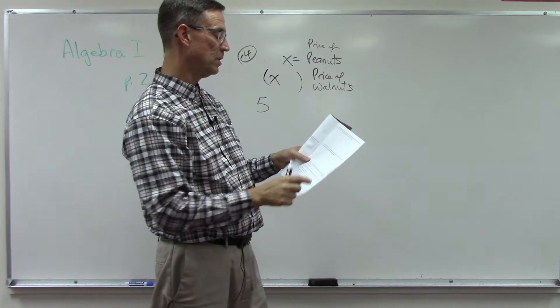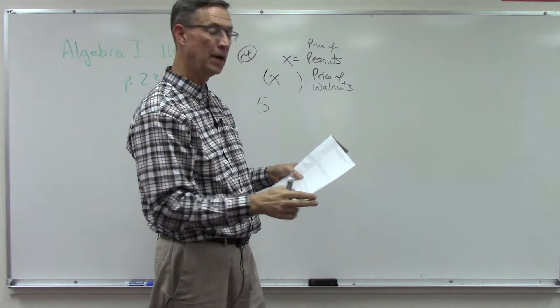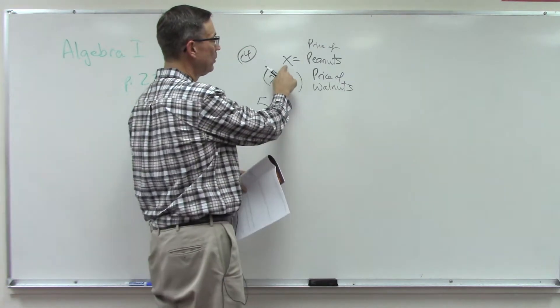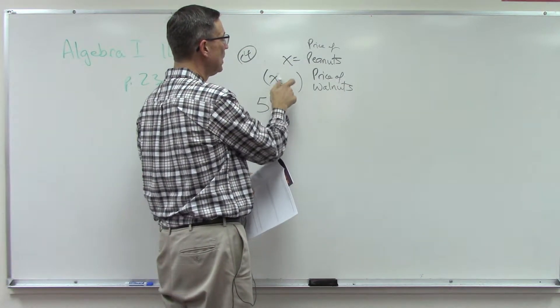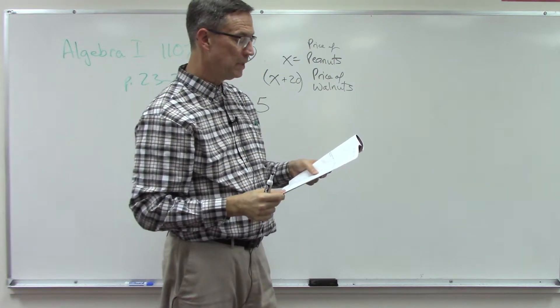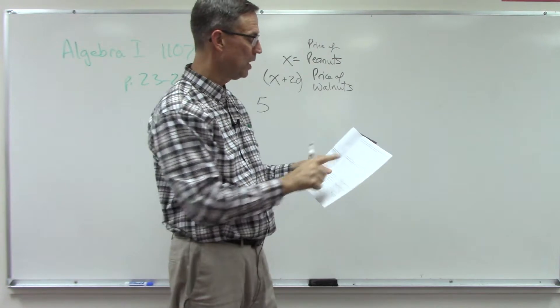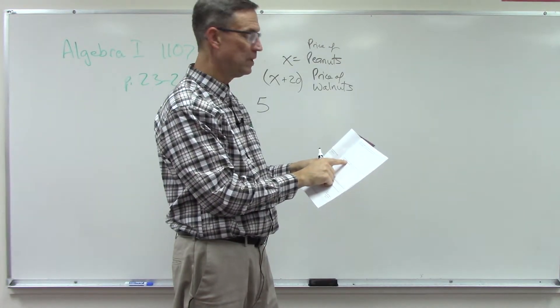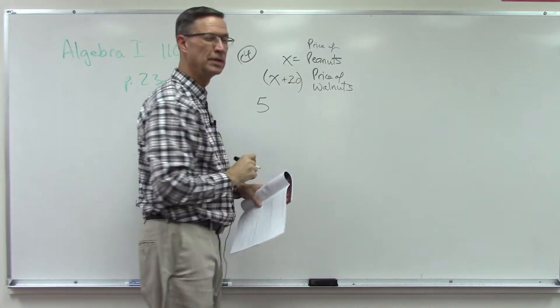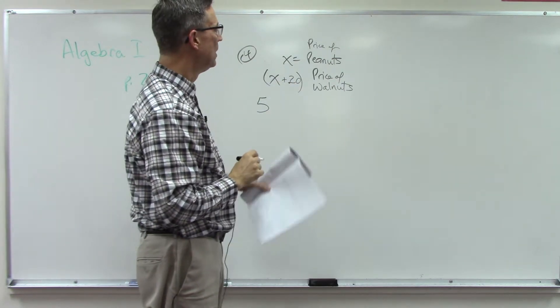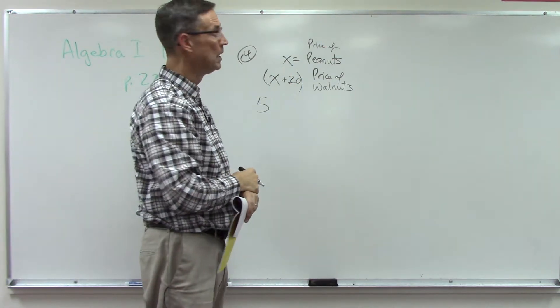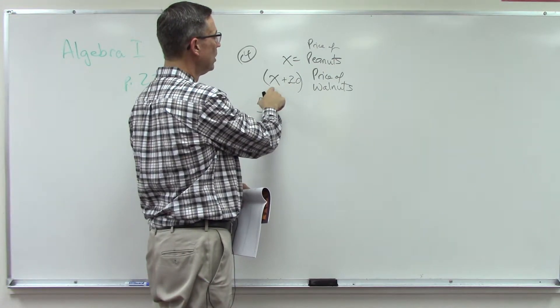That price, it says walnuts are 20 cents per kilogram more than the peanuts. So whatever the price of the peanuts is we have to add 20. But now here's the thing, we're doing this in dollars. So since we have seven dollars and eighty cents, 7.8, we need to actually make this 0.20. That's a little tricky. But this is going to come out in a decimal number and then we want this to be 20 cents more per kilogram.